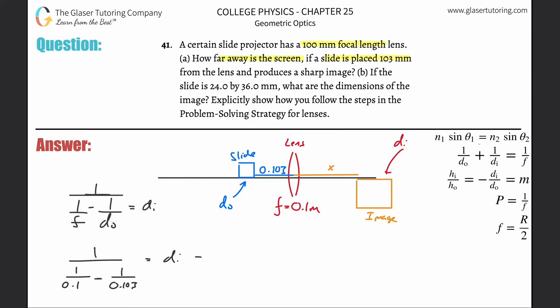Let's calculate: di = 1 divided by (1/0.1 - 1/0.103). That gives us 3.43 meters.